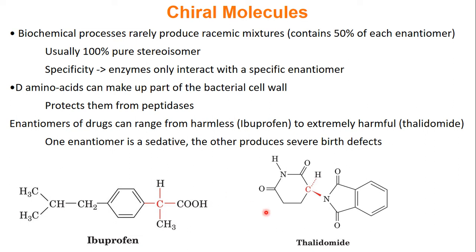Other drugs, like thalidomide in the 1950s, are more concerning. It was a sedative with a chiral carbon — one version is a sedative, but the other version produces very severe birth defects. When pregnant patients took it as a sedative, they were taking both versions, and their unborn children would have severe birth defects. Thalidomide is no longer on the market. This illustrates something we must test for when developing new drugs: if they have chiral centers, could one version of that drug be harmful to us?